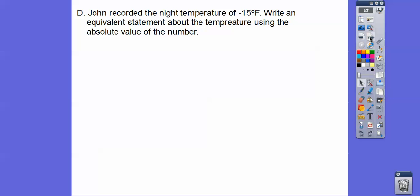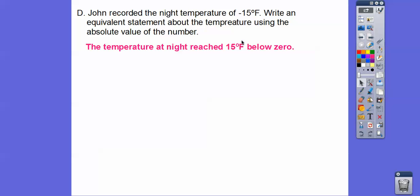John recorded the night's temperature of negative 15 degrees Fahrenheit. We're going to write an equivalent statement about the temperature using the absolute value. The absolute value of negative 15 is 15, so negative 15 degrees Fahrenheit means positive 15 degrees below zero. The temperature at night is 15 degrees Fahrenheit below zero — if we write 'below zero,' we don't need the negative sign.